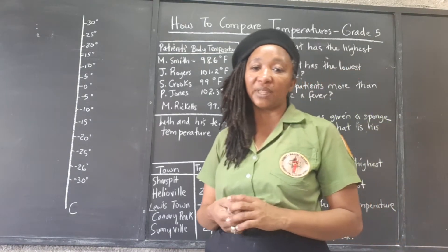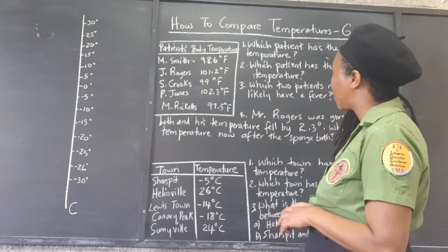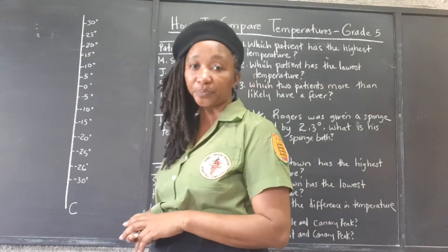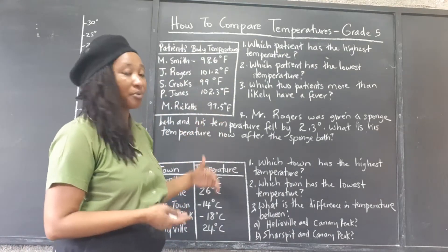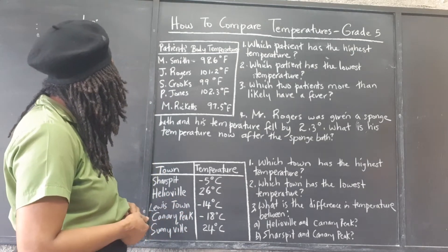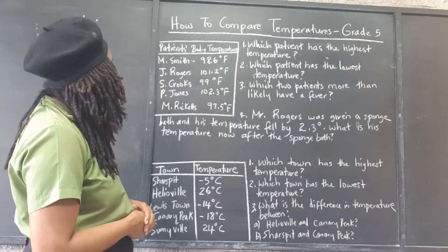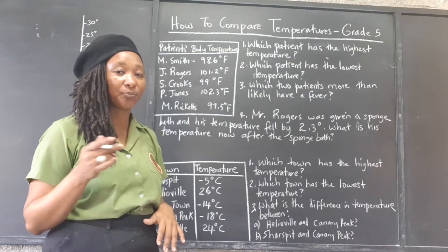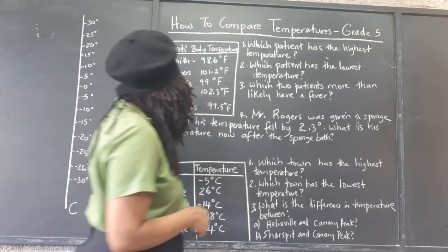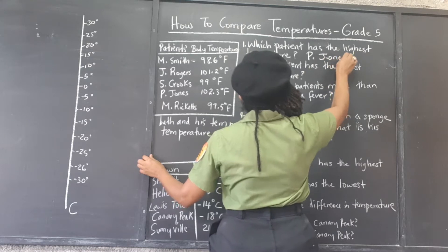These temperatures were more than likely taken with a digital thermometer, so we get our decimal places. So let's answer the questions. Which patient has the highest temperature? The bigger the number, the higher the temperature — that means the hotter the body is. The highest temperature is 102.3 degrees Fahrenheit, and it asks which patient has that temperature, so that would be P. Jones.